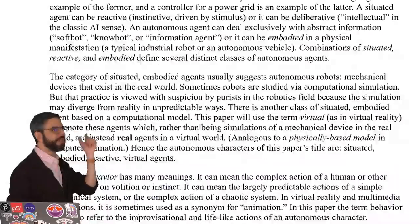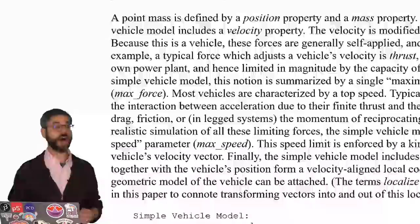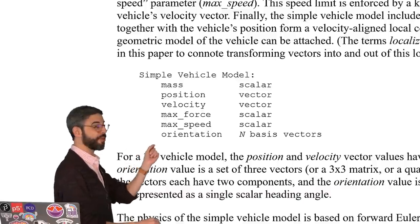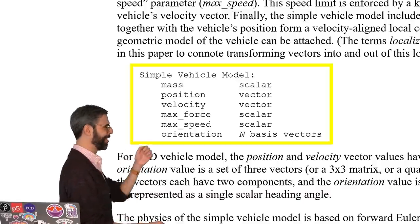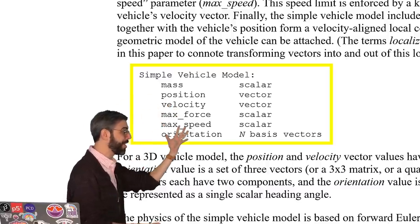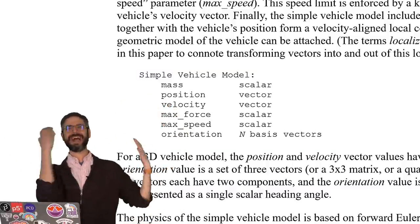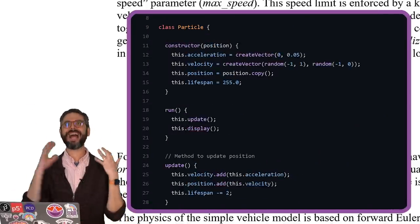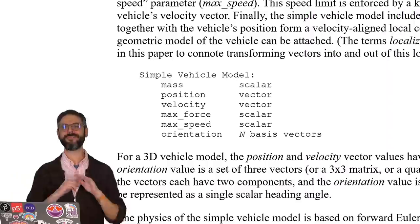In fact, scrolling down in the paper itself, under a simple vehicle model, we quickly find that what are the properties of that vehicle? Mass, position, velocity, max force, max speed, orientation. This is exactly everything that I've done with mover, a particle, and now what I'm going to call vehicle.